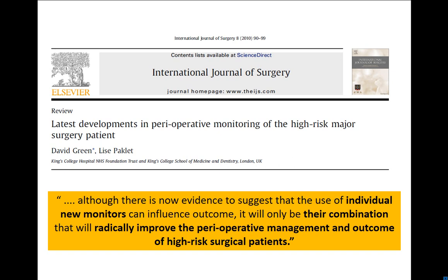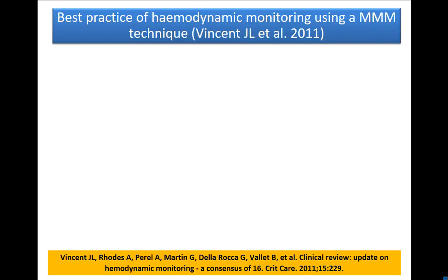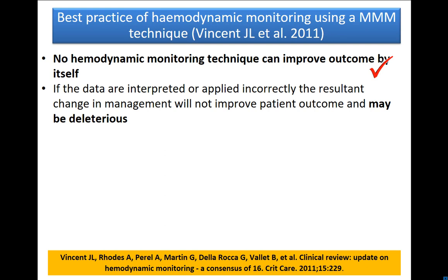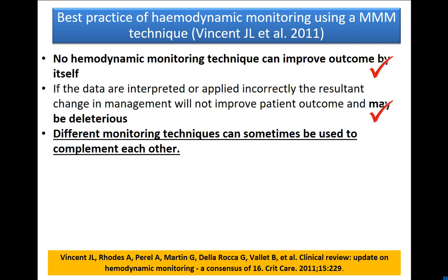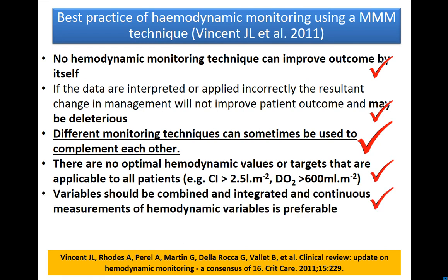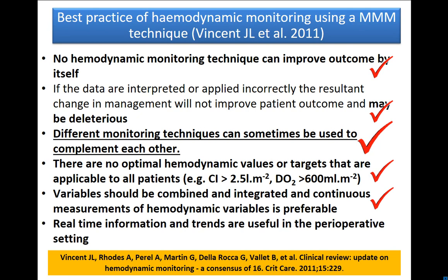In 2010, we wrote a paper saying that although there is some evidence that new monitors can improve outcomes, it will only be their combination that will radically improve perioperative management. Professor Vincent, head author of an update on haemodynamic monitoring — a consensus of 16 published in 2011 — stated: no haemodynamic monitoring technique can improve outcome by itself; if data are interpreted incorrectly, the resulting change in management will not improve outcome and may be deleterious. Different monitoring techniques can sometimes be used to corroborate each other. Trying to drive an 85-year-old's cardiac index to 2.5 litres or oxygen delivery to greater than 600 is ridiculous — variables should be combined and integrated.